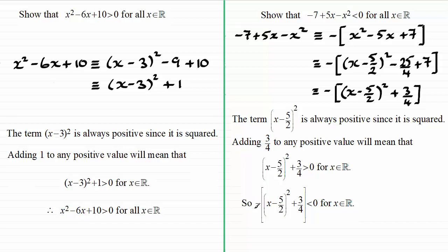So putting the negative outside, it's going to mean that that expression is now going to be negative for all real values of x. And so to summarize then, we therefore have -7 + 5x - x² is less than 0 for all real values of x.